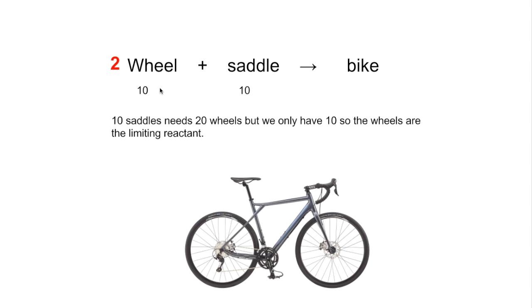So once we know that we can then say right the ratio will tell us how many bikes we can make. So it's a two to one ratio between wheels and bikes and so we're only going to make five bikes. So the wheel was the limiting reactant and the saddle in this case was the one in excess.